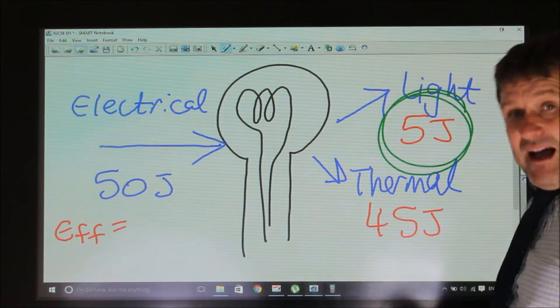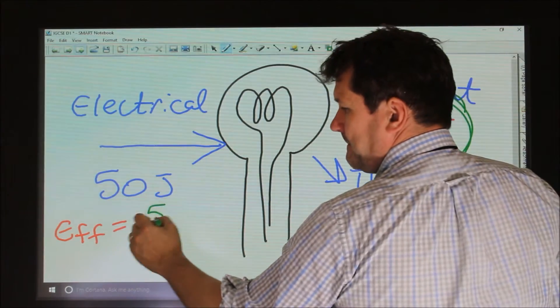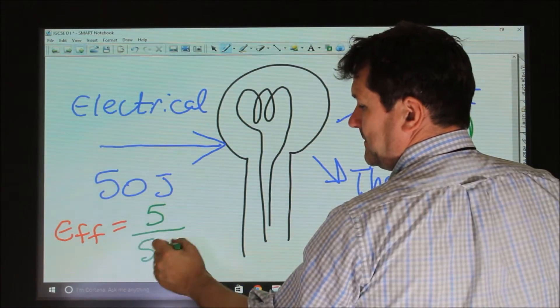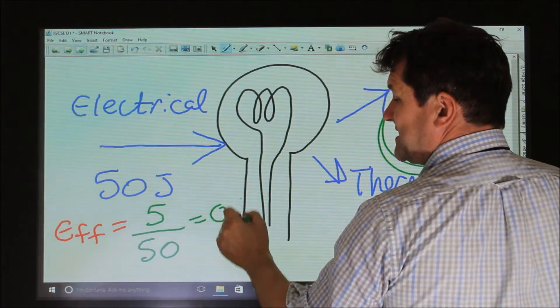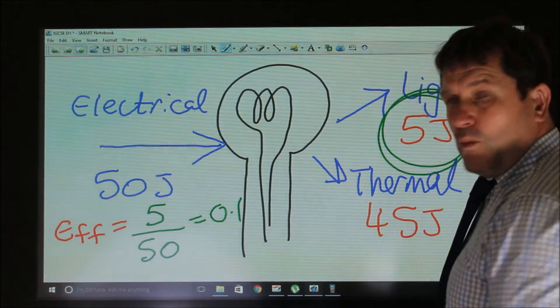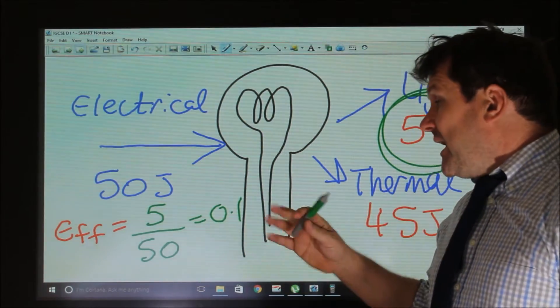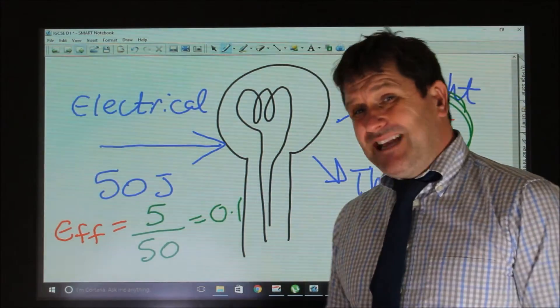The total energy in is 50. So the efficiency of this light bulb is 0.1. We could convert this into a percentage if we wanted to, times by 100 and see that it's 10% efficient.